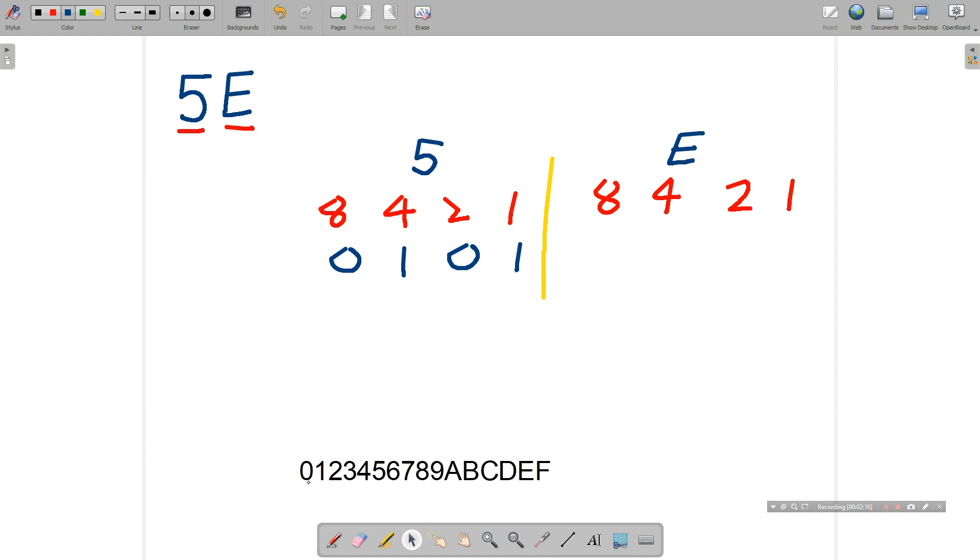So we can see that once we get to 9 we continue counting but using letters instead. So we have 7, 8, 9, 10, 11, 12, 13, 14, 15. So F is simply the digit we use to represent the number 15. So now that we understand we've got this hexadecimal number list, what is E in hexadecimal as a value?